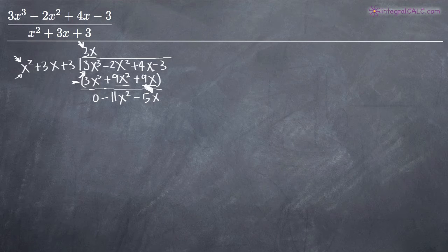Once we've performed that subtraction, we bring down the next term from our original numerator. The -3 comes down, and we end up with -3.